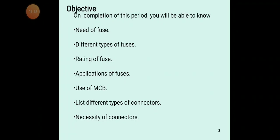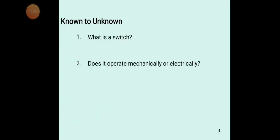First, we are going to understand what are relays, fuses, connectors, and MCBs. Starting with the relay — from the known to the unknown — what we know is what is a switch. A switch is a device which connects two points, either off or on. It makes the connection or breaks the connection between two connecting points.